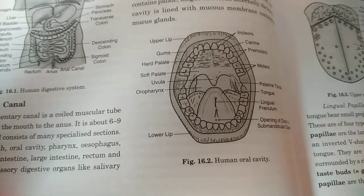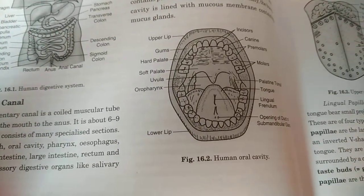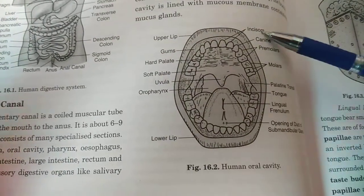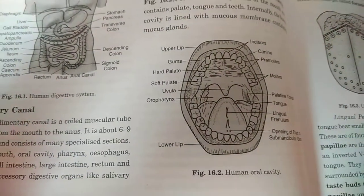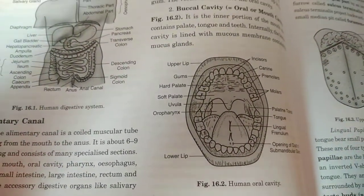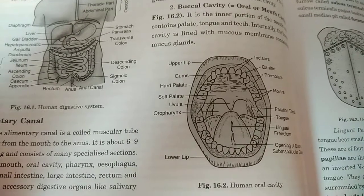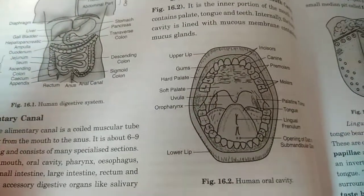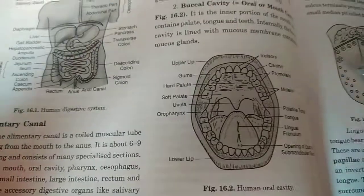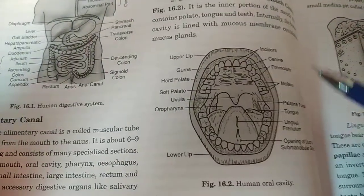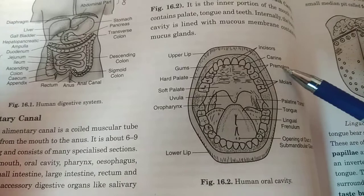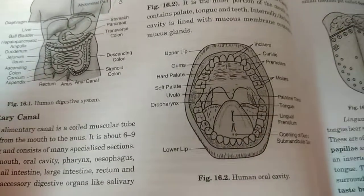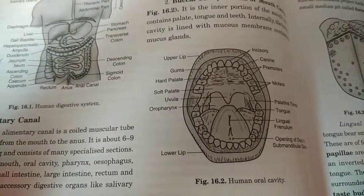There are four types of teeth present in the human mouth: incisors, canines, premolars, and molars. Incisors are called cutting teeth, canines are called piercing teeth, premolars are called grinding teeth, and molars are called wisdom teeth.